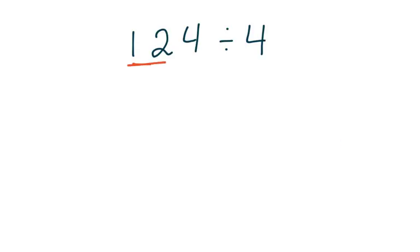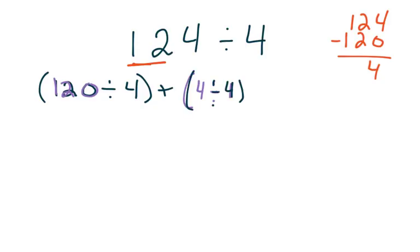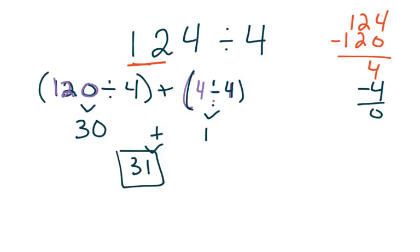If I look at my two greatest place values, I see that there's a 12 there, and I know that 4 goes into 12 evenly. So if 4 goes into 12 evenly, I know that it goes into 120 evenly, because this 12 is 12 tens. So I'm going to divide 120 divided by 4. I take this 120 and subtract it from my whole, or my dividend, to see what I have left to divide, and I'm left with 4. That's also a division fact I know: 4 divided by 4. I subtract that 4 and I'm left with 0. 4 goes into 12 three times, so it goes into 120 thirty times. And 4 goes into 4 one time. Adding my two partial quotients together, I'm left with 31 as my quotient.